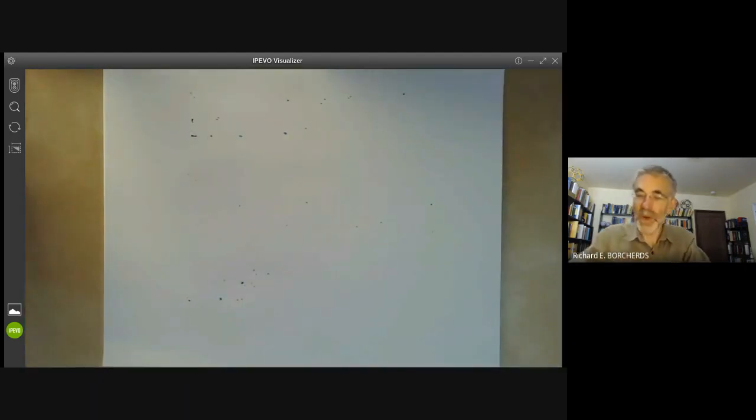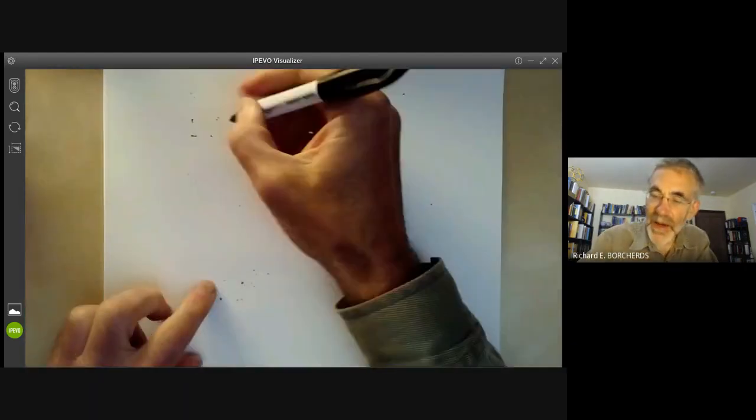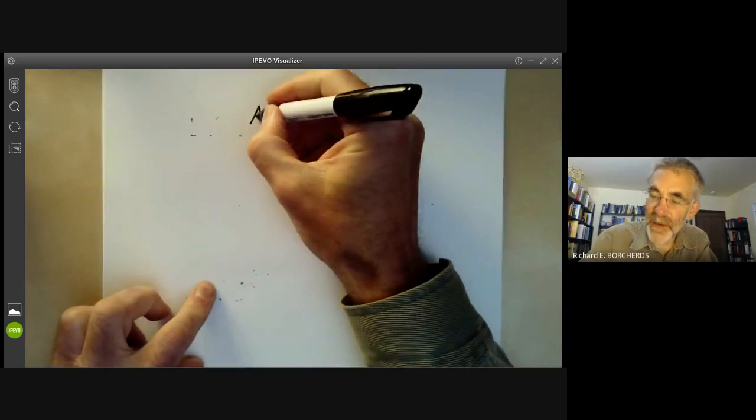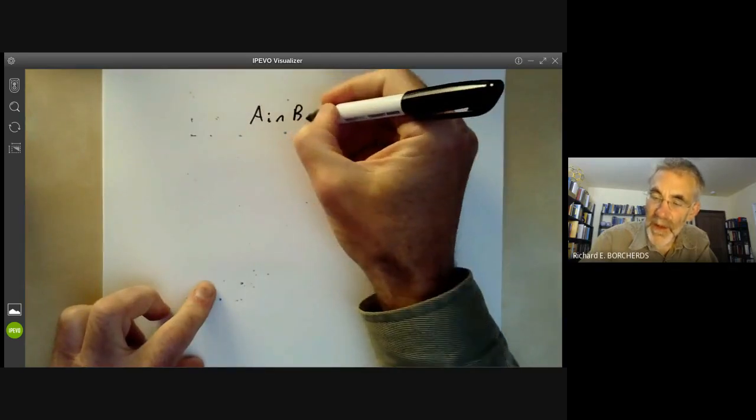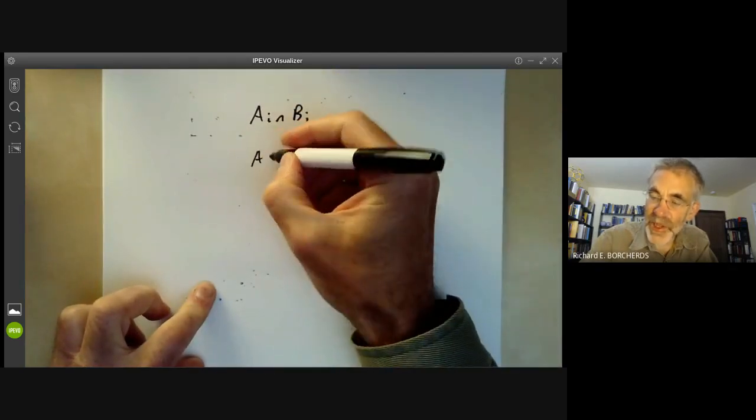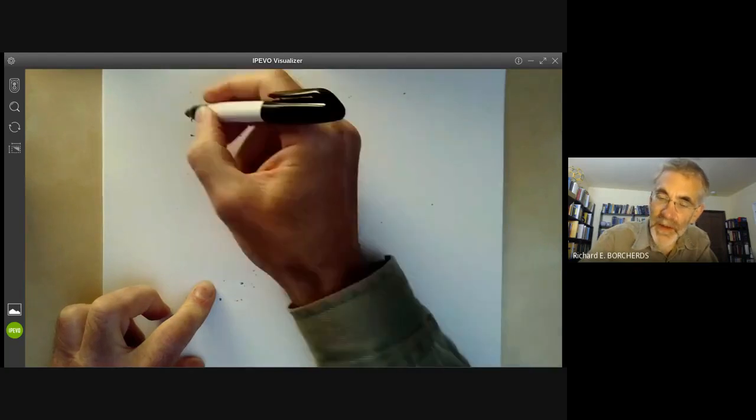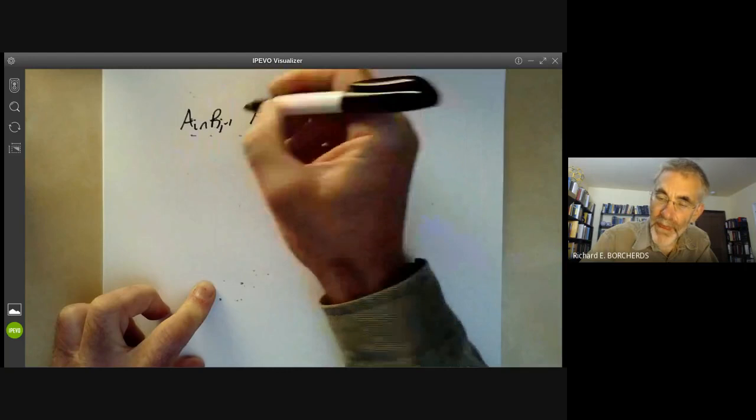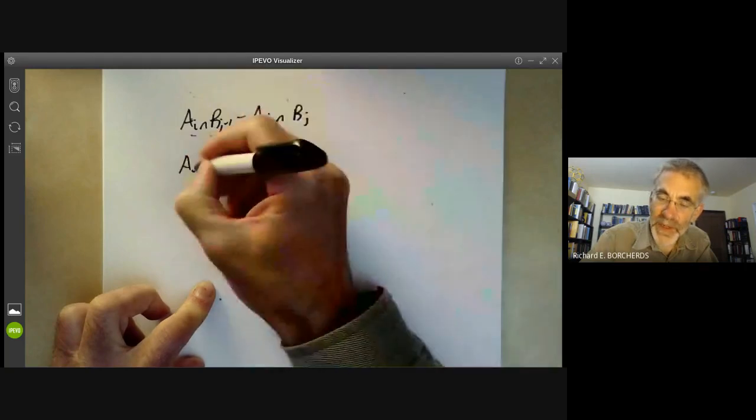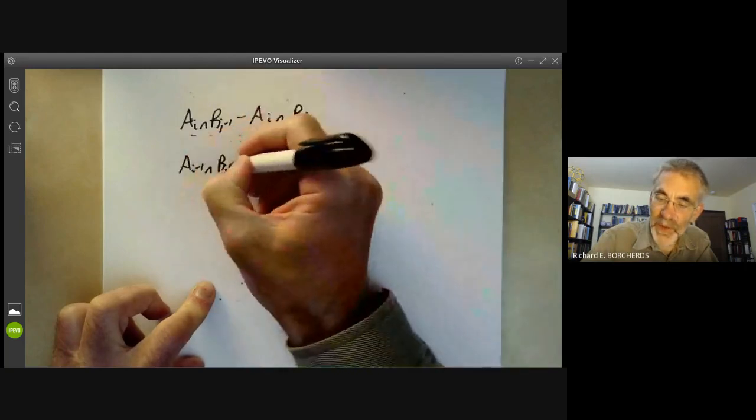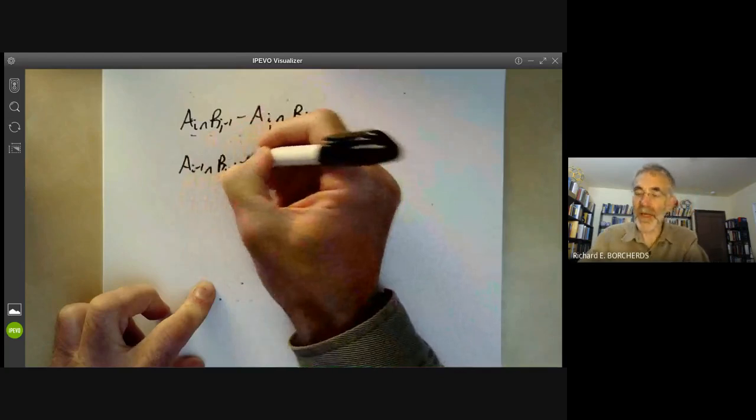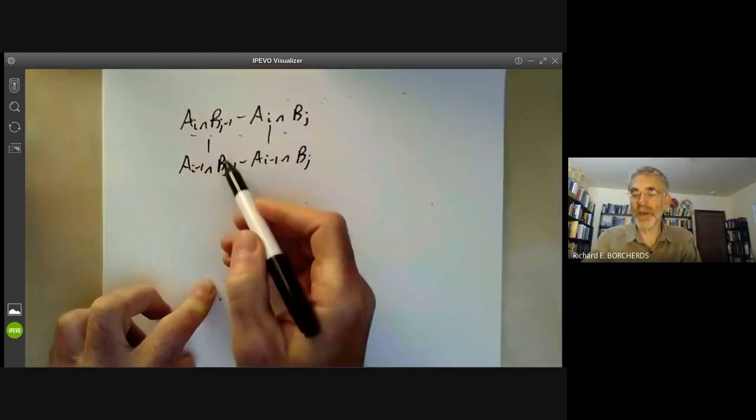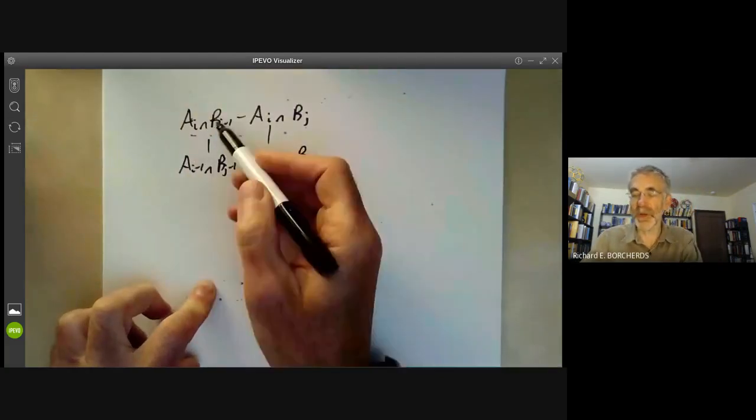Well, what we're getting is a group A, I intersect B, J. A, I minus one intersect B, J. A, I intersect B, J minus one. And we may as well quotient out by this group here since it's a normal subgroup of everything.